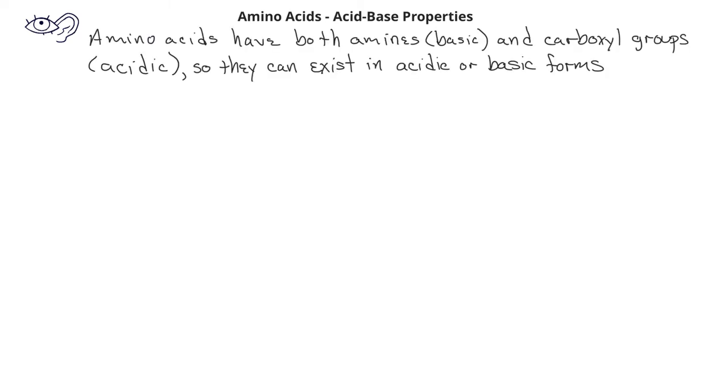We've already seen that the structure of amino acids involves both an amine and a carboxyl group. We've learned previously that amines can act as bases, and carboxyl groups, carboxylic acid groups especially, can act as acids.